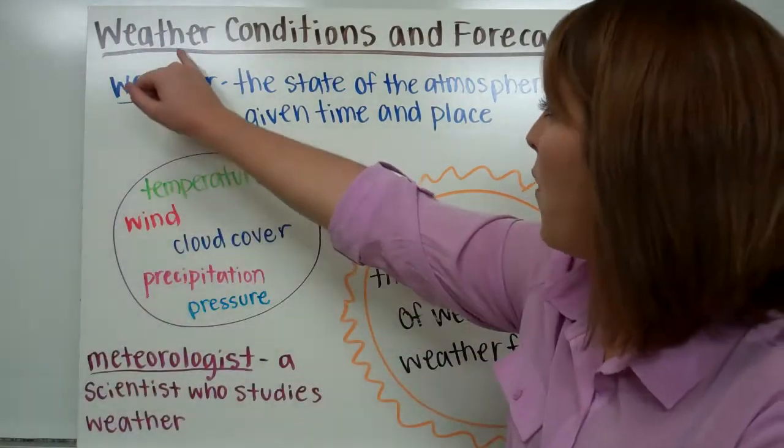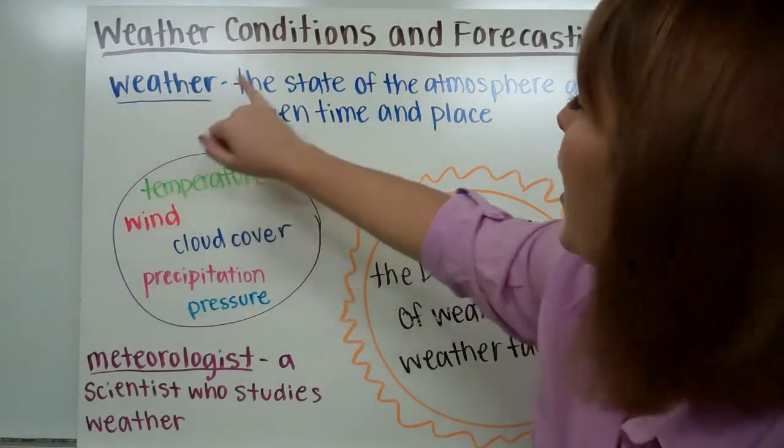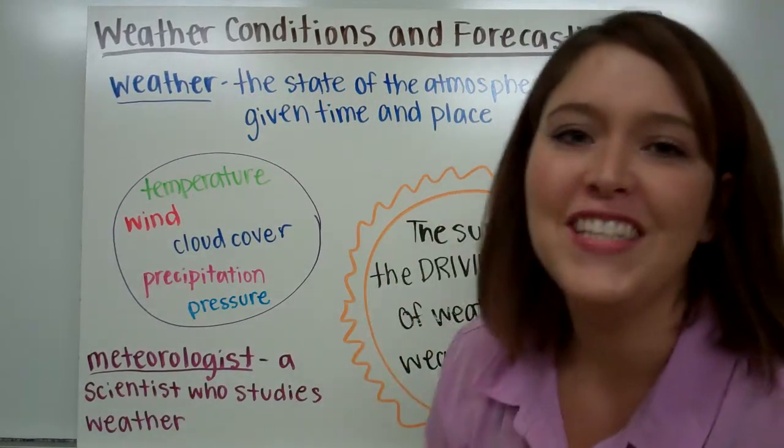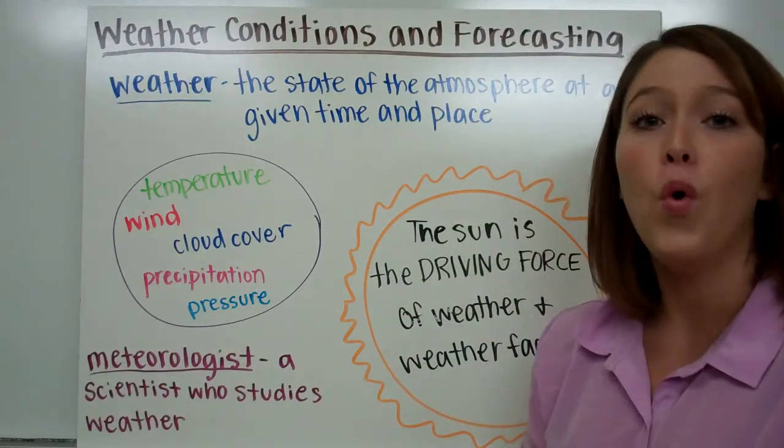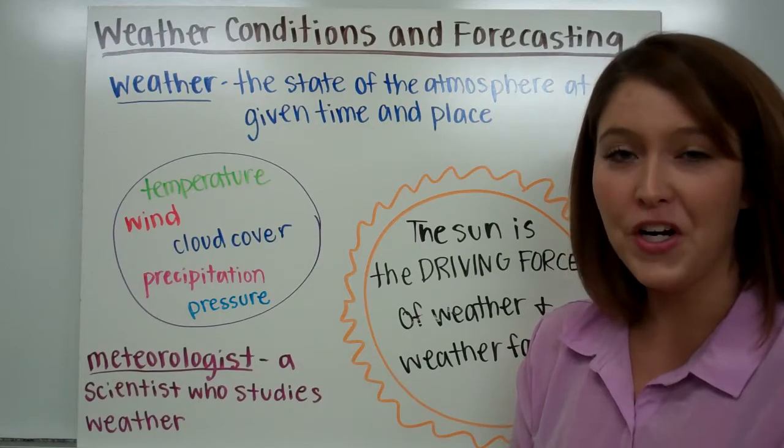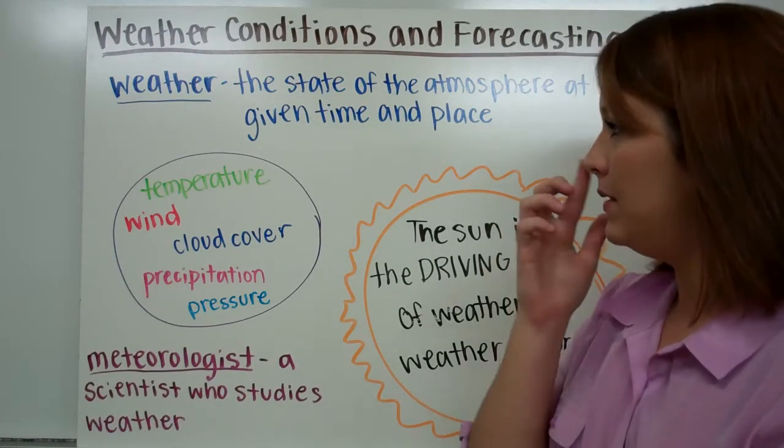Today we're going to be talking about weather conditions and forecasting. When we think about weather, we think about the state of the atmosphere at a given time and place. This is the weather activity that we observe from one place at one specific time, not over a large period of time or over a large area. This is one place, one time specifically.